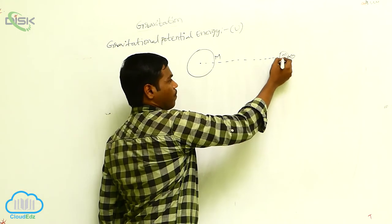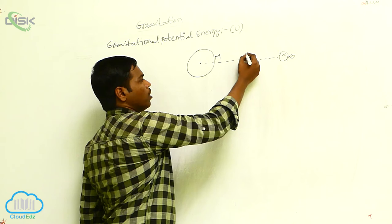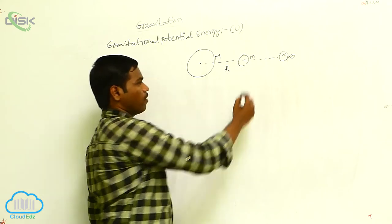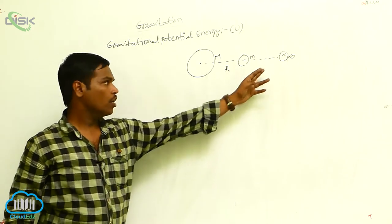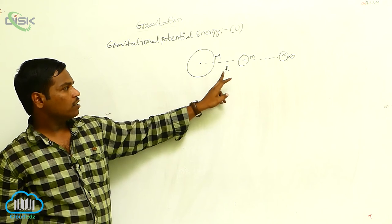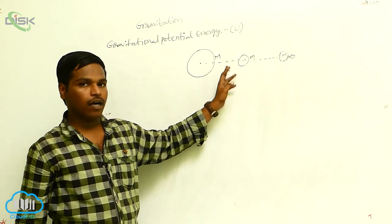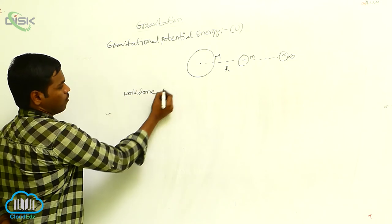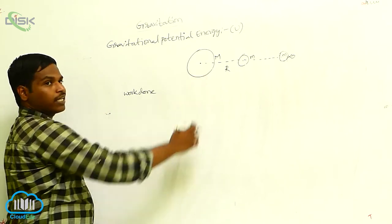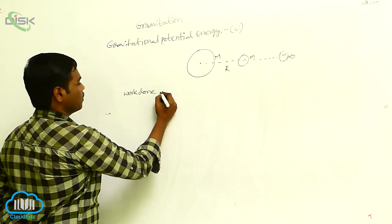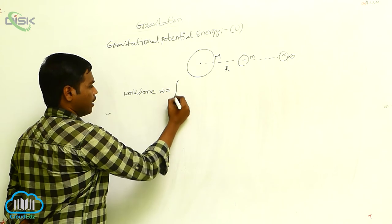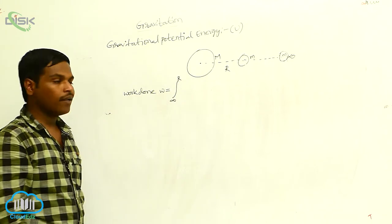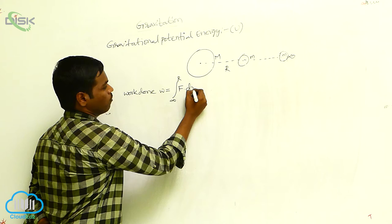I am bringing this small m mass from an infinite distance to a distance capital R from the capital M mass. The work done W in bringing the small m mass into this gravitational field is equal to the integration from infinity to R of force into dr.